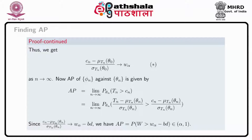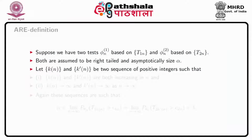It is worth mentioning that this AP belongs to the open interval (alpha, 1). Now we consider the testing problem H naught: theta belongs to omega naught against H_a: theta belongs to omega_a, for obtaining asymptotic relative efficiency and its definition.